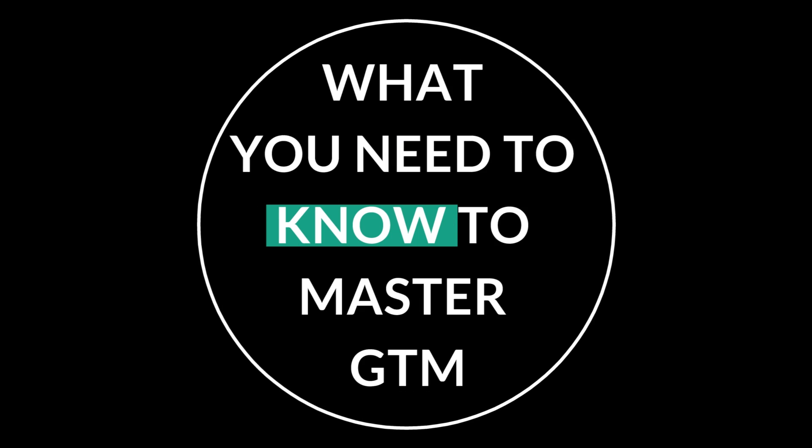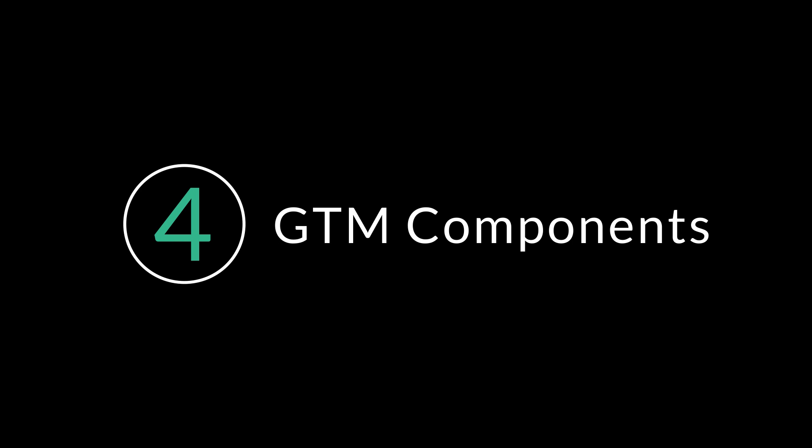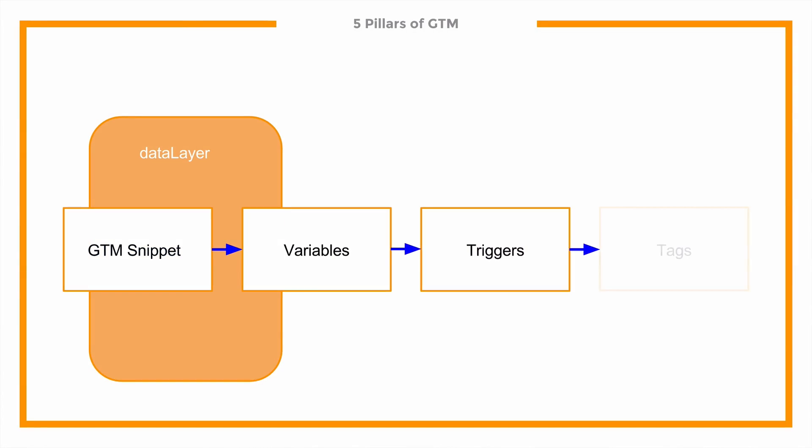Now let's dive into the concepts you need to understand to master GTM. Number four: GTM components. Google Tag Manager consists of tags, triggers, variables, and the data layer. Did you know that they all interconnect and can't exist separately? Having a solid understanding of these components and their connection to each other is important. Especially if you run into trouble, you need to know how to backtrack and check these components to see if they work correctly or as expected.